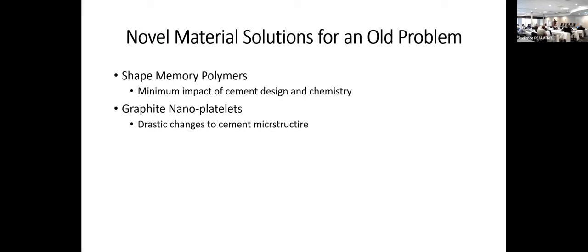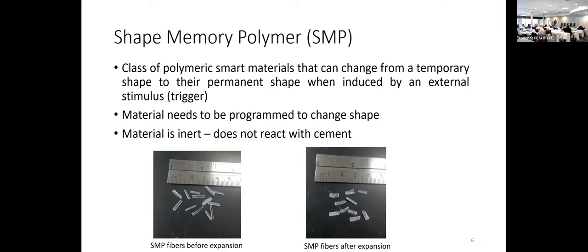To attack this old problem, we followed two different solutions. Solution number one is using shape memory polymers. Shape memory polymers have minimal impact on the cement design and chemistry because this additive has no chemical reaction with the cement. The second approach is using graphite nanoplatelets, which on the contrary make drastic changes to the cement microstructure. I'll start by talking about the shape memory polymer solution.